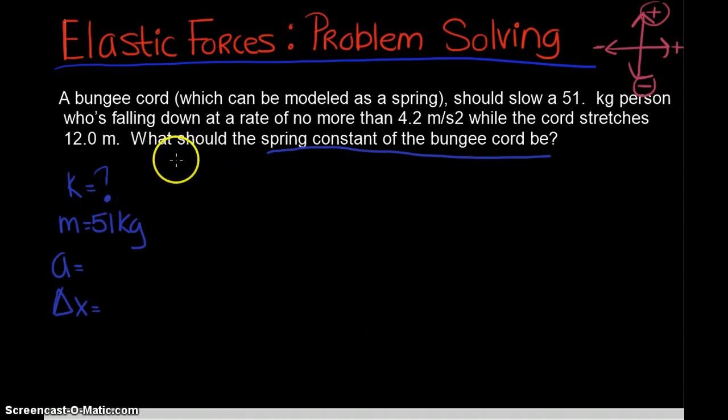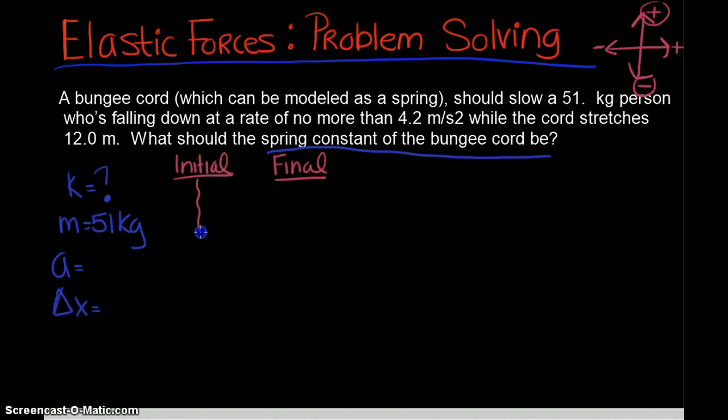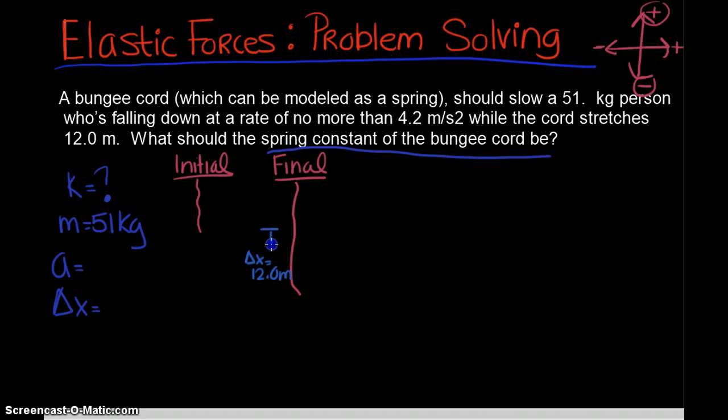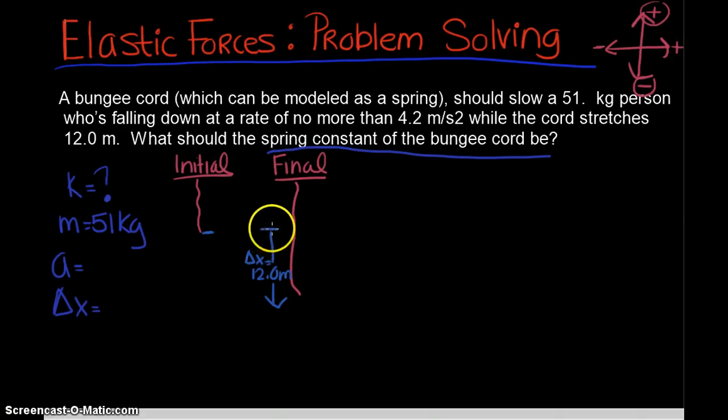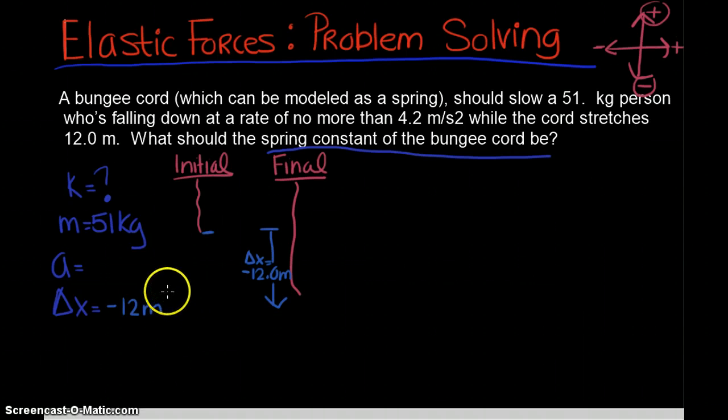I'm going to draw before and after pictures. So this will be the initial state of the spring, which in this case is the bungee cord, and the final state. Initially we have a bungee cord, and it says the cord is going to stretch. This displacement that's given is the displacement of the spring - the length of this stretch would be 12 meters and the direction is down. So because we made the downward direction negative, the displacement is negative 12 meters.